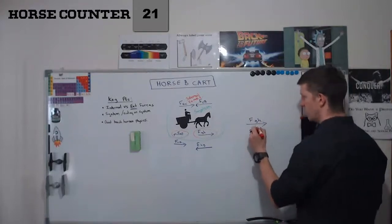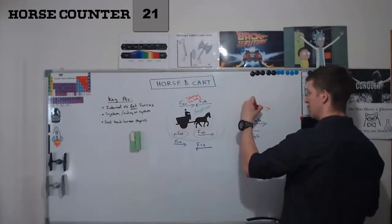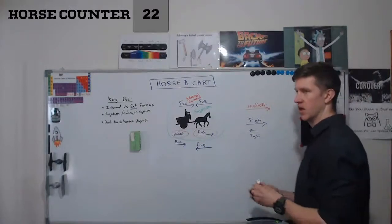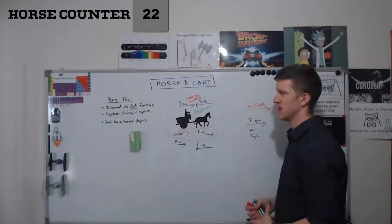And therefore, the total result is going to end up in this direction and we will actually get motion. So it's all about looking at the system and identifying what forces act on what objects. That is the horse and cart problem.